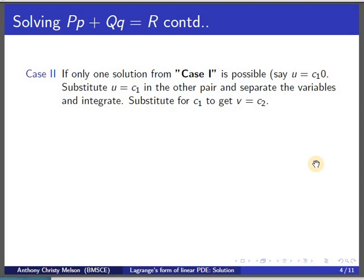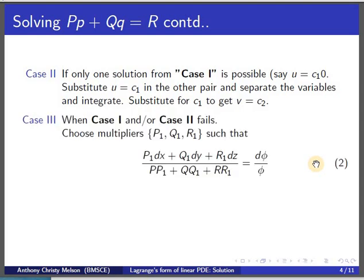It is not always possible to solve for two solutions u and v using case 1. So if we are able to solve u equal to c1, we can use that in another pair to eliminate some of the variables and bring it to a variable separable form. Once we integrate and get a solution we substitute for c1 to get v equal to c2. It is possible that case 1 and/or case 2 fails; in such a case we choose multipliers p1, q1, r1 to construct equation 2.